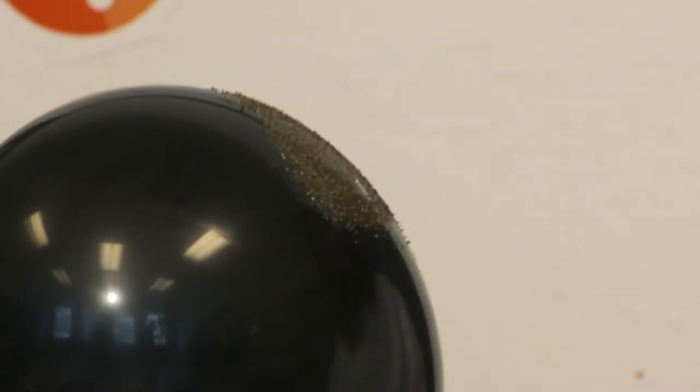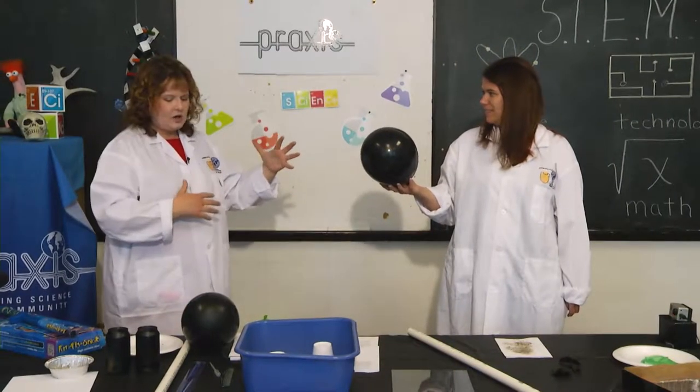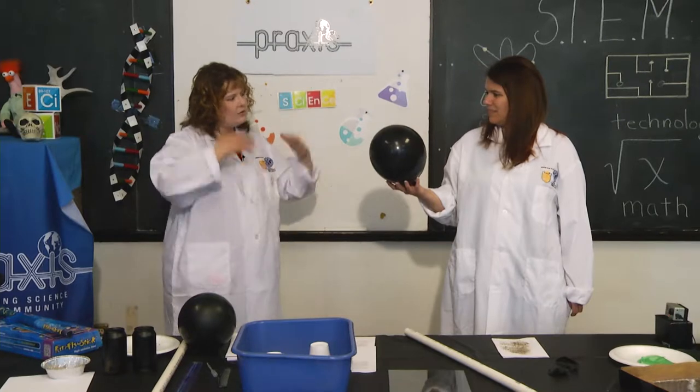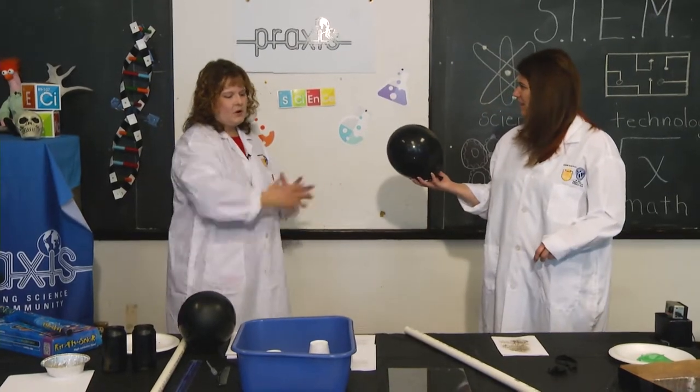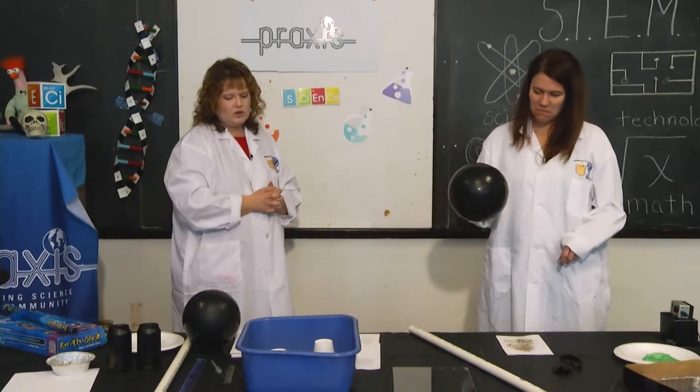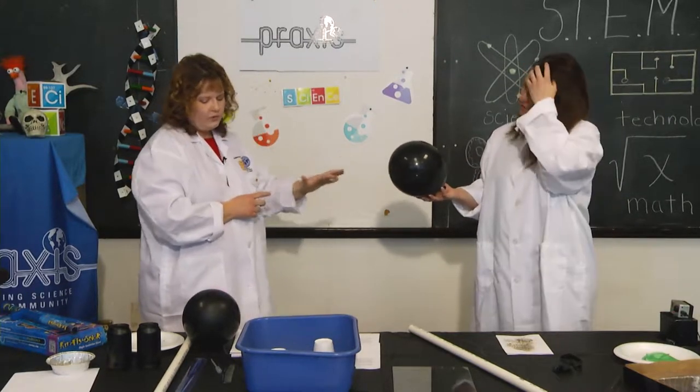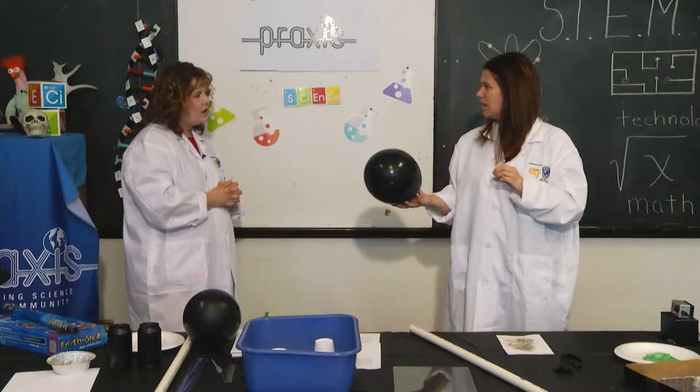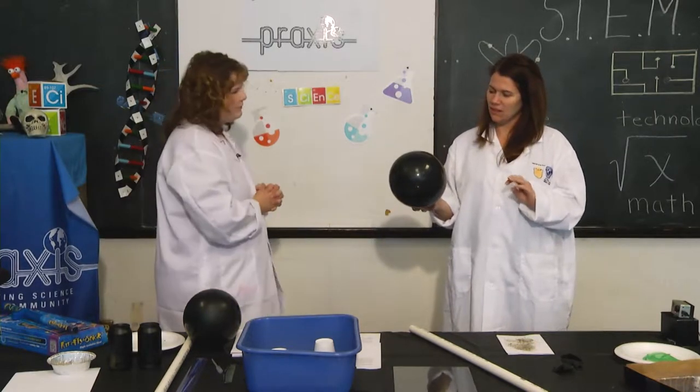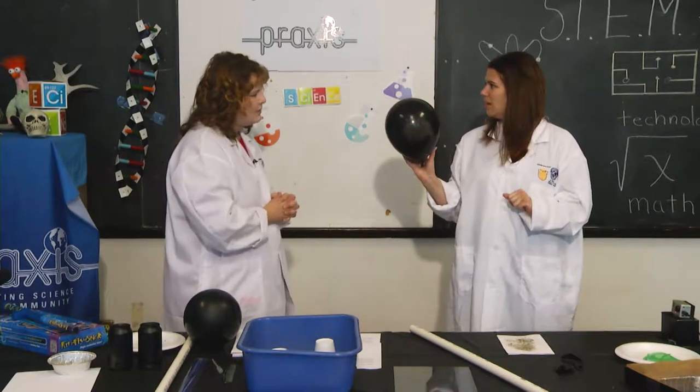But basically when you rub the balloon on your hair, you're creating that friction caused by the hair in the balloon. And then those electrons again are moving from your hair to your balloon. And then it's creating that positive static electricity charge, or sorry, gives the balloon a negative charge. And when you hold the balloon over it, the pepper sticks to the balloon because it has those protons and they are positive. So that's how that would work. So tons of fun with that experiment too.